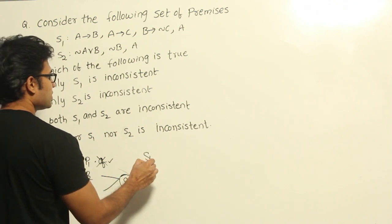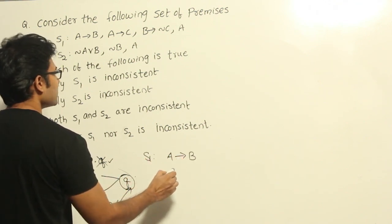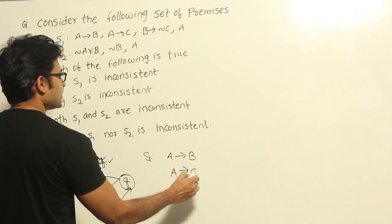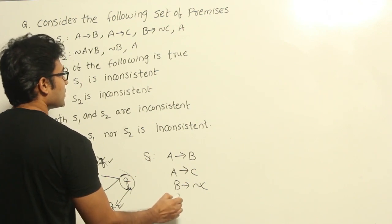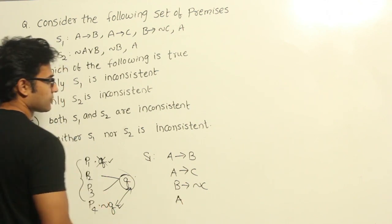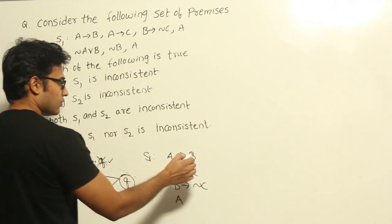Now let's see this example here. They have given a set of premises, let's say S1, which are like this: A implies B, A implies C, B implies negation C, and then A. So this is given, right? So now you can just simplify it from these two.